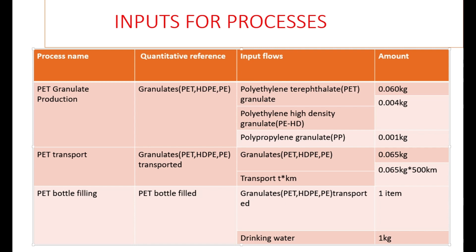We may require a lorry, aeroplane, or other types of transport. Transport is given in kilometers: 0.065 into 500 kilometers. Similarly, we have PET bottle filling. PET bottle filling's reference point is the PET bottle filled — it has to be filled with water, requiring granulates and also drinking water: 10 liters amounting to 1 item and drinking water of about 1 kilogram.